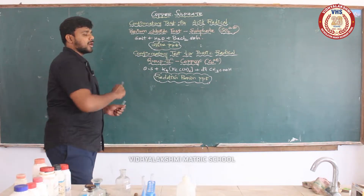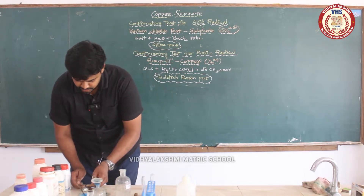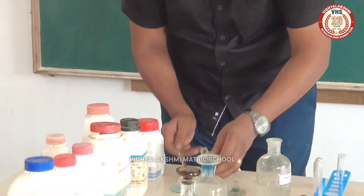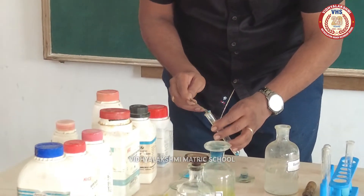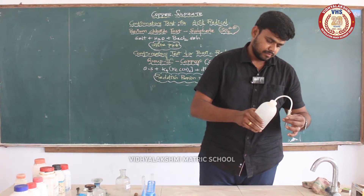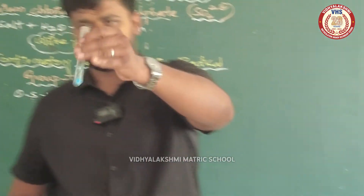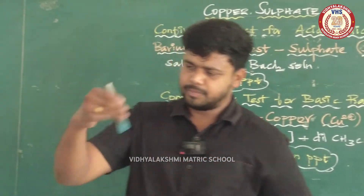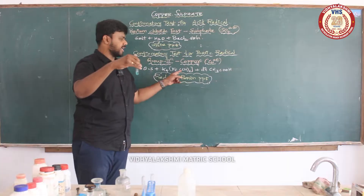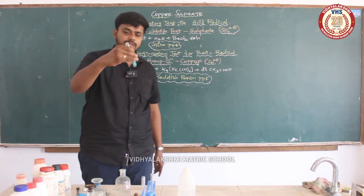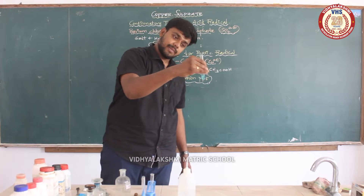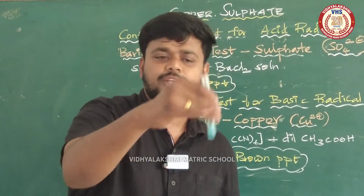For the basic radical, copper is the test. You have to prepare the original solution — a pinch of solid that will dissolve in water. Do the original solution. If we prepare it, we add potassium ferrocyanide (K4-FeCN6). If you have potassium ferrocyanide, you will get a reddish brown precipitate.